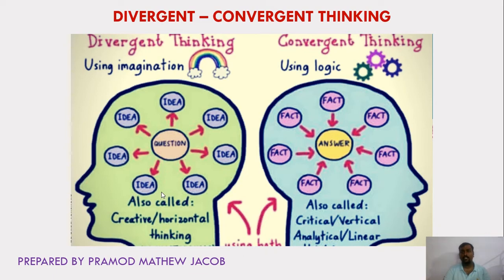Whereas in convergent thinking, it uses logic or facts learned through experience or academic knowledge. We arrive at the answer from facts we have already known. So it is called critical thinking, vertical thinking, analytical thinking, or linear thinking — all these are synonyms of convergent thinking.